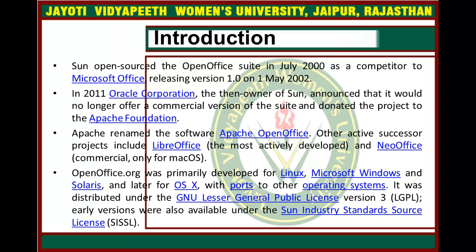OpenOffice.org was primarily developed for Linux, Microsoft Windows, and Solaris — similar to how we use MS Office in our Windows operating system for documentation, presentation, and database work. It was distributed under the GNU Lesser General Public License version 3, that is LGPL. Early versions were also available under the CERN industry standard source license, that is SISSL.